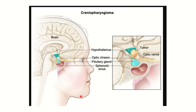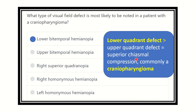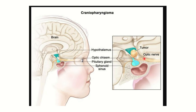Here you can see a cross-section of the brain showing different structures, including the hypothalamus, the pituitary gland, and the optic chiasm located here. The craniopharyngioma tumor is shown compressing the optic chiasm from above. In this case, bitemporal hemianopia develops because the compression comes from the upper part.